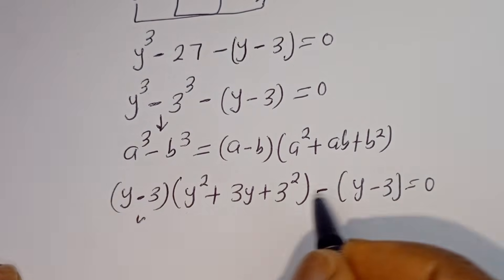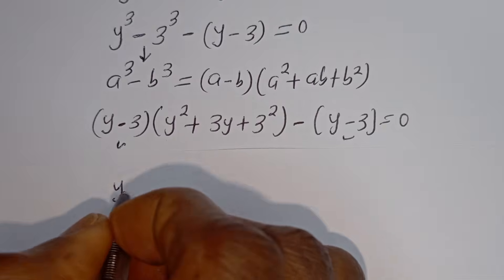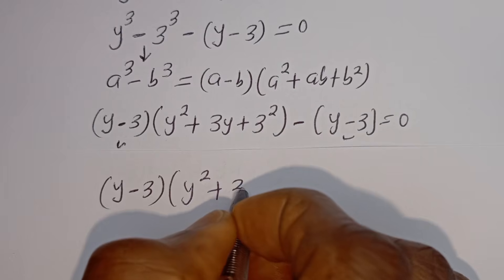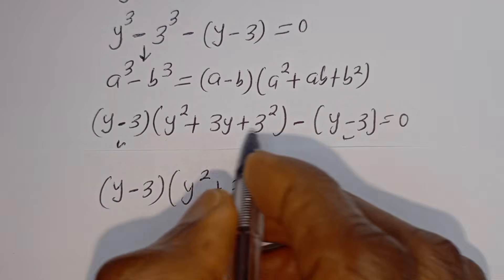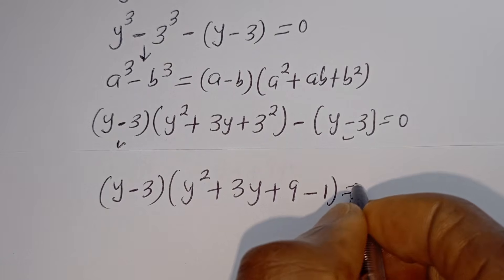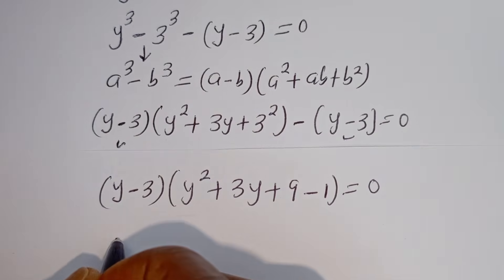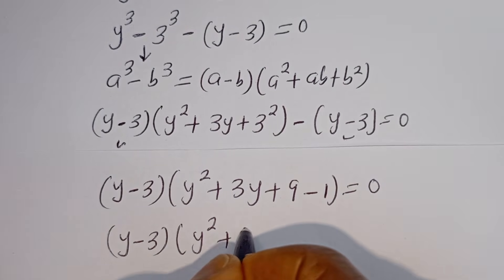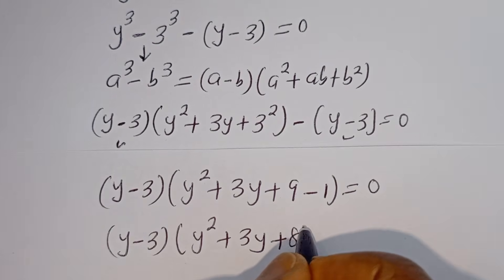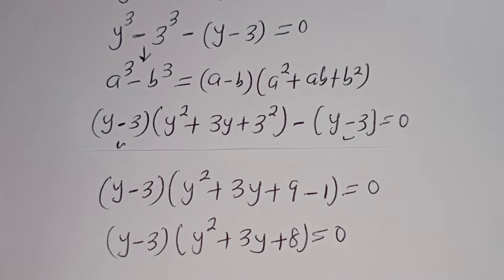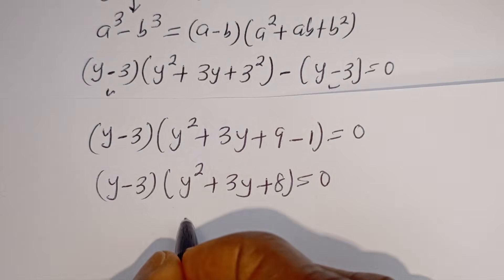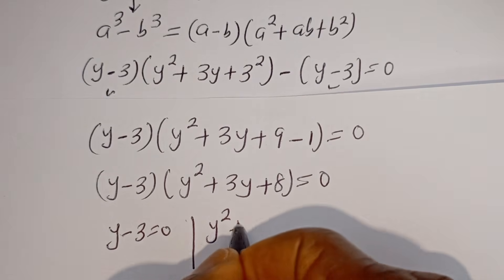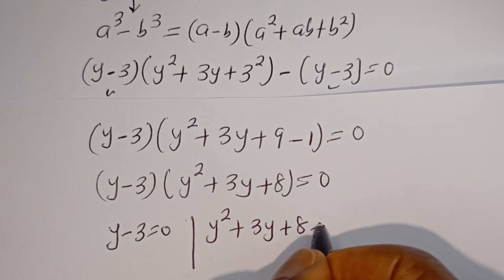Then, y minus 3 is a common factor. We get y minus 3, bracket y squared plus 3y plus 9 minus 1, that will be plus 8, is equal to 0. There are two cases here. The first case is y minus 3 is equal to 0. And the second case is y squared plus 3y plus 8 is equal to 0.